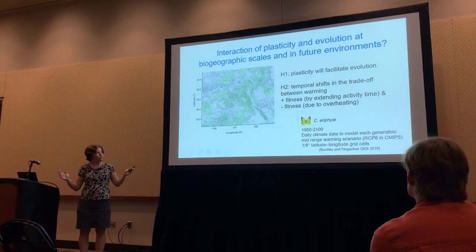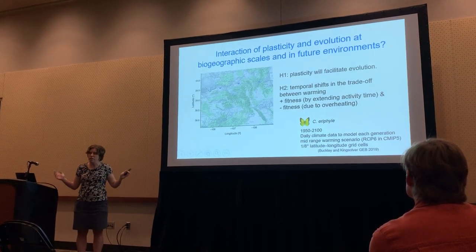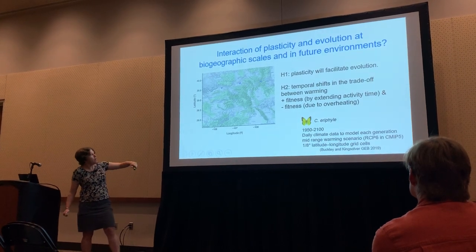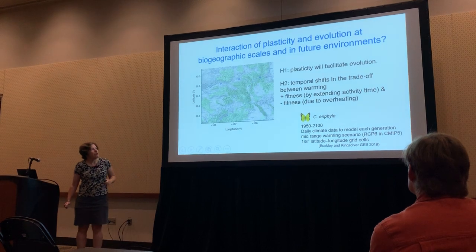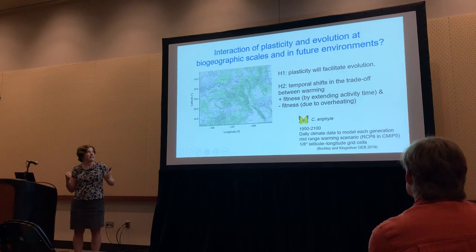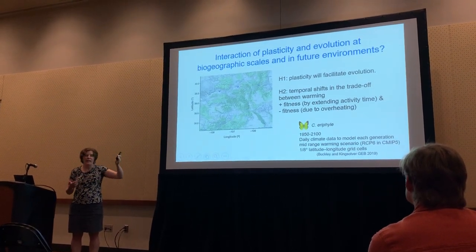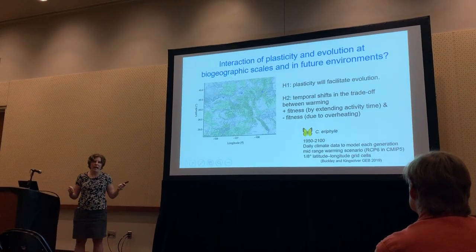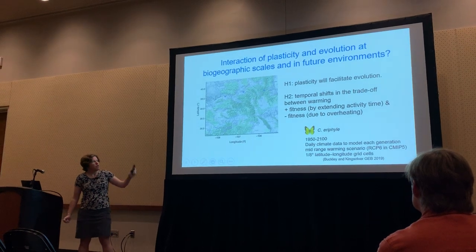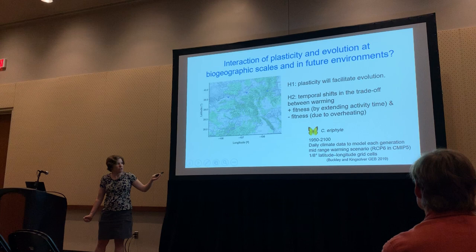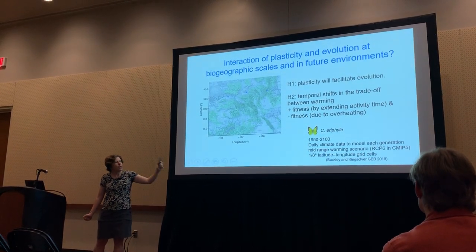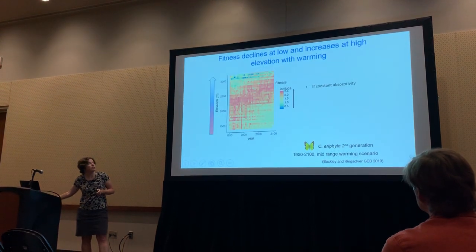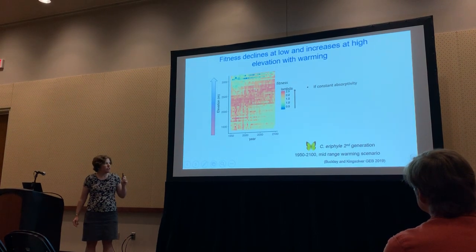We've finally been able to run this model at biogeographic scales and into future environments, looking across the state of Colorado, where the Rocky Mountains go from lower left to upper right. Our first hypothesis was that plasticity would continue to facilitate evolution at this biogeographic scale. We're looking up to 2100, expecting temporal shifts in the tradeoff between warming increasing fitness by extending activity time versus decreasing fitness due to overheating. We're running this model at a daily resolution, modeling each generation from 1950 to 2100 using a mid-range warming scenario RCP6, applied to one-eighth degree latitude/longitude grid cells.